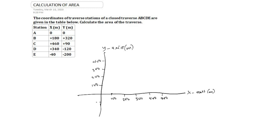On the negative y-axis we have minus 100, minus 200, and similarly on the negative x-axis, minus 100. The origin is zero. Point A has coordinates (0, 0), so this point is our point A. Point B has coordinates (180, 320), so it is somewhere around here at x=180 and y=320.